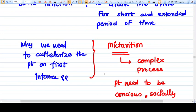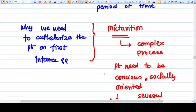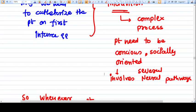A more meaningful and basic question: why do we need to catheterize the patient in the first place? Because you know that micturition, which is the normal way of excreting urine from the body, is a complex process. The patient needs to be conscious and it must be socially appropriate.